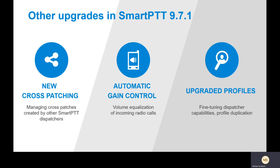Some other upgrades in 9.7.1 include enhanced cross patching. Typically with most dispatching consoles, cross patching is controlled at the dispatcher level — so if Dispatcher 1 creates a cross patch, Dispatcher 2 has no control over it, and if Dispatcher 1 turns off that cross patch or their computer, the cross patch goes away. We've moved the cross patching control into the radio server, so now Dispatcher 1 can turn on a cross patch, Dispatcher 2 can turn it off, and if Dispatcher 1 turns off their computer for the day, the cross patch can still keep going.